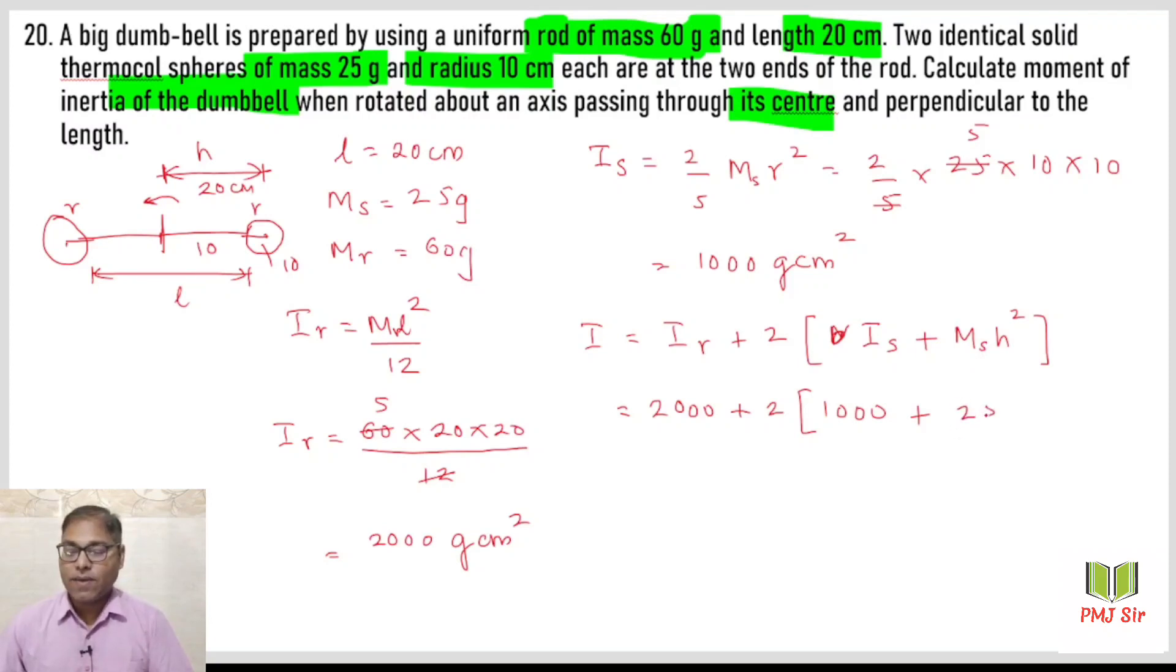Substituting values: I_r is 2000 plus 2 times (I_sphere is 1000 plus mass 25 into h square which is 20 times 20). This becomes 2000 plus 2 times (1000 plus 25 times 400). That's 2000 plus 2 times (1000 plus 10000) equals 2000 plus 2 times 11000.